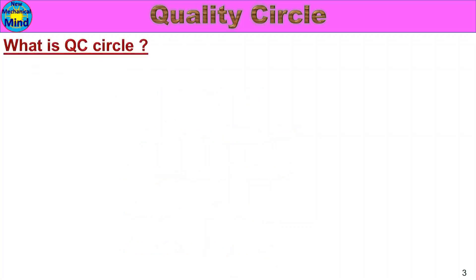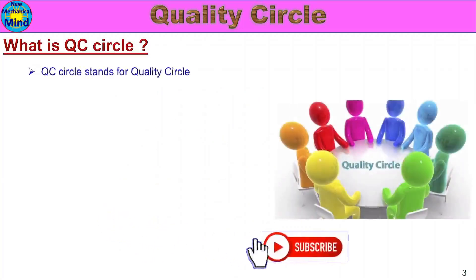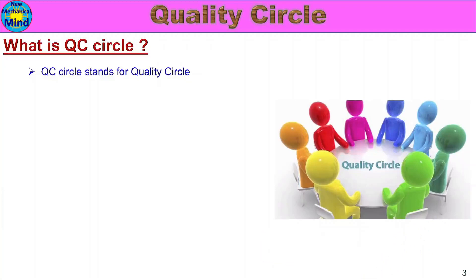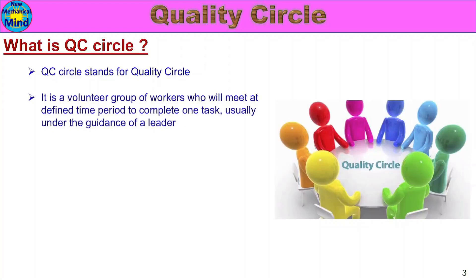A Quality Circle is a volunteer group of workers who meet at defined time periods to complete one task, usually under the guidance of their leader. Employees or workers work to improve the quality of their program. This is the Quality Circle.